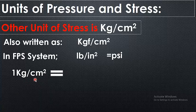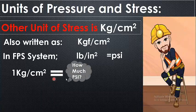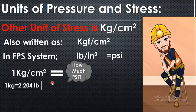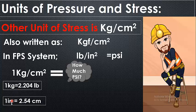Now the question is: 1 kg per centimeter square is equal to how much psi? As we know, 1 kg is equal to 2.204 lbs, and 1 inch is equal to 2.54 centimeters. These are the values you have to remember, or must know, as an engineer.